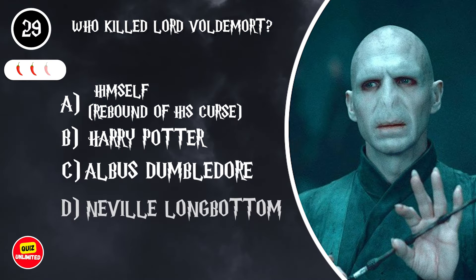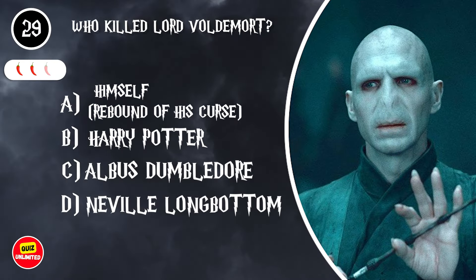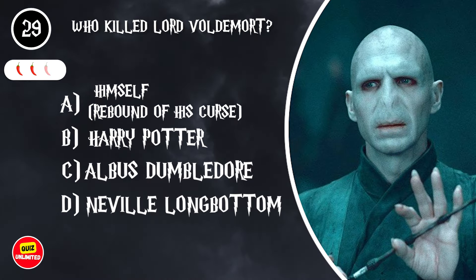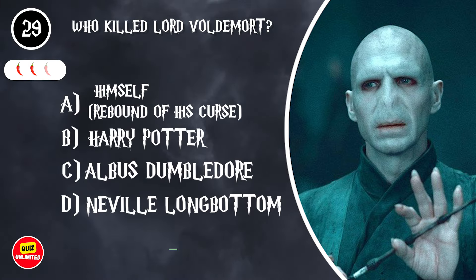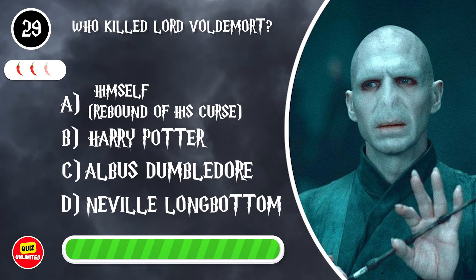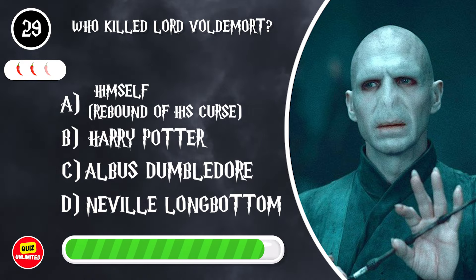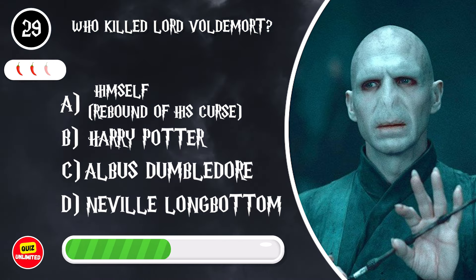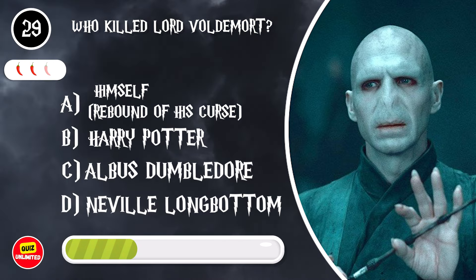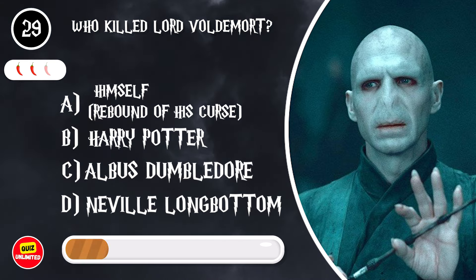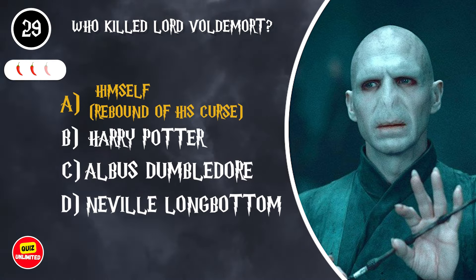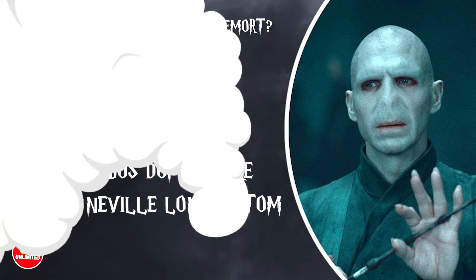Who killed Lord Voldemort? A. Himself — rebound of his own curse. B. Harry Potter. C. Albus Dumbledore. D. Neville Longbottom. It's A. Himself — rebound of his curse.